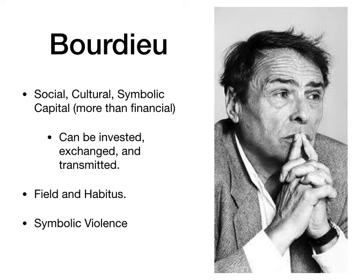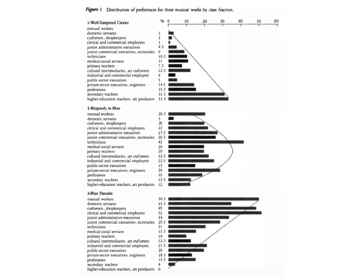One interesting application of Bourdieu's work is in leisure contexts. A graph shows three lists of the same types of people — organized by type of work, roughly associated with class status — mapped against three different types of music. It shows that different tastes in music can be associated with different class positions: the top graph shows higher-class people prefer that type of music; the middle graph shows an evenly spread, middle-class taste; and the bottom graph is skewed toward manual workers and domestic servants, suggesting a lower-class taste in music.